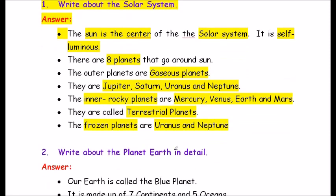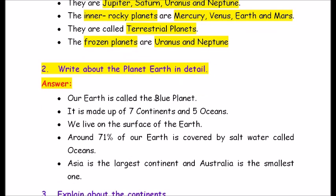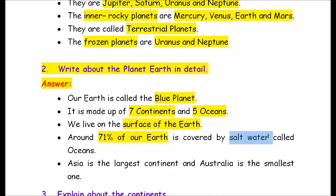Question number 2: Write about the planet Earth in detail. Answer: Our Earth is called the blue planet. It is made up of seven continents and five oceans. We live on the surface of Earth. Around 71% of our Earth is covered by salt water called oceans. Asia is the largest continent and Australia is the smallest one.